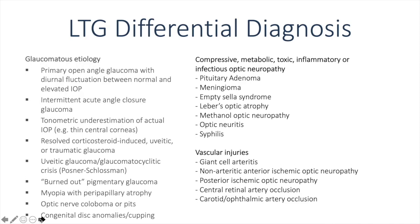The differential diagnosis for LTG is very long. Glaucomatous causes include primary open-angle glaucoma where high pressures are not seen during clinic hours, intermittent acute angle closure where pressure spikes between visits, artificially lower pressures in patients with thin corneas, previous pressure spikes from corticosteroid use, uveitis, or trauma. Non-glaucomatous causes include compressive, metabolic, toxic, inflammatory, or infectious optic neuropathies, as well as vascular injuries like giant cell arteritis, non-arteritic anterior ischemic neuropathy, and others. All of these can mimic low-tension glaucoma and are difficult to tease out without a proper history.